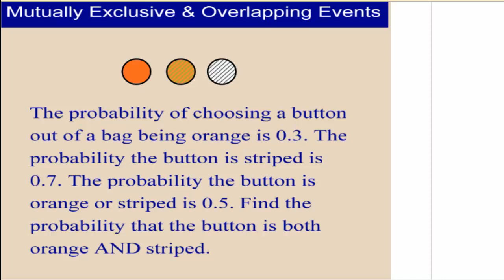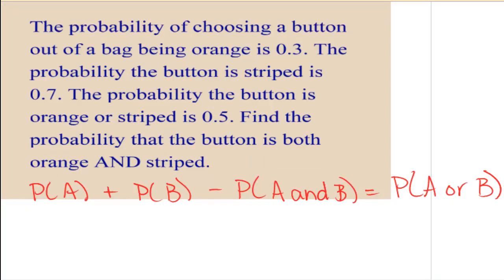The probability of choosing a button out of a bag being orange is 0.3. The probability the button is striped is 0.7. The probability the button is orange or striped is 0.5. Find the probability that the button is both orange and striped. So how would you approach this problem? What are you solving for?